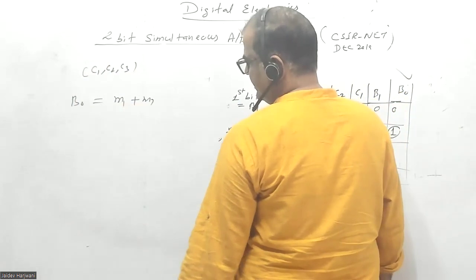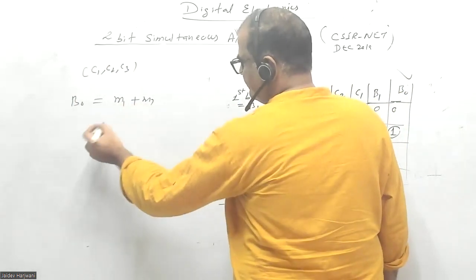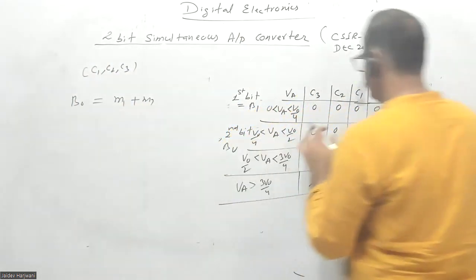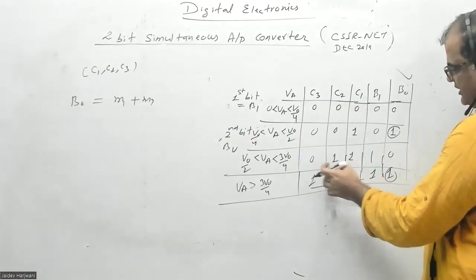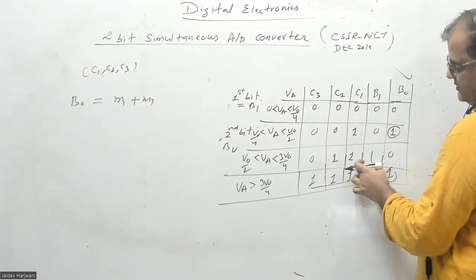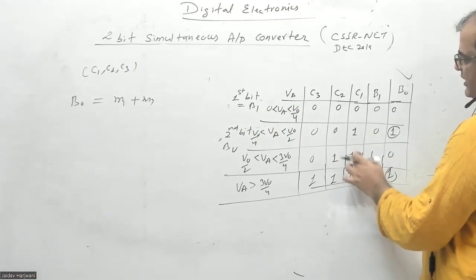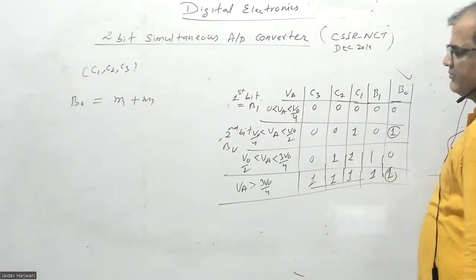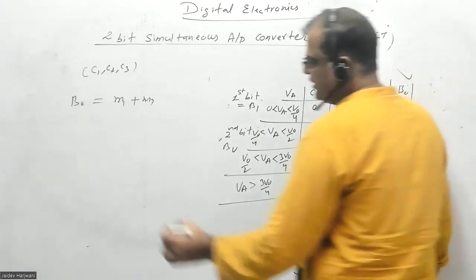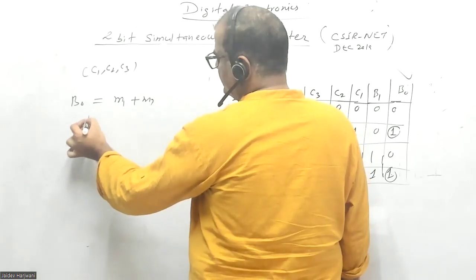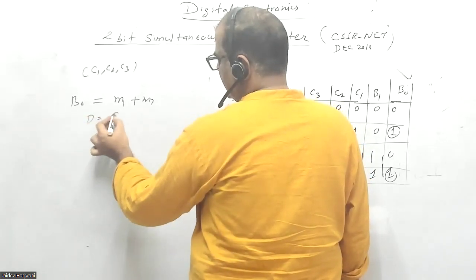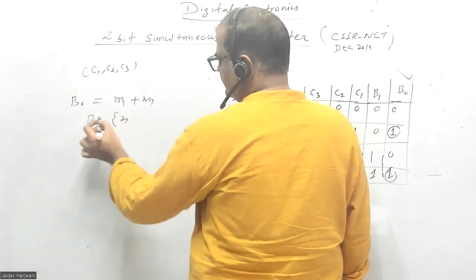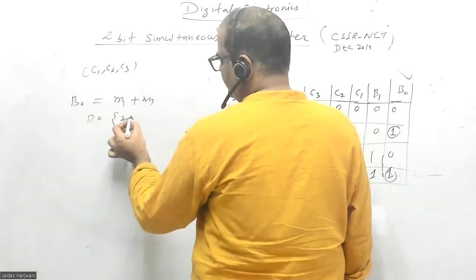These are all minterms. The maxterms are 000 which is m0, and 011 which is m3. m0 and m3 are your maxterms. The remaining are don't care conditions.